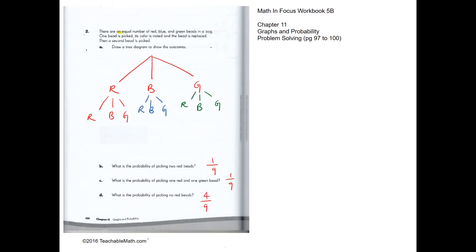Question two: we have an equal number of red, blue, and green beads. One bead is picked, the color is noted, and the bead is replaced, then a second bead is picked. When picking a bead there is equal chance of getting red, blue, or green. Since the bead is replaced, the second pick also has equal chance of red, blue, or green. Let's count the possibilities: you can get red and red, or red and blue.